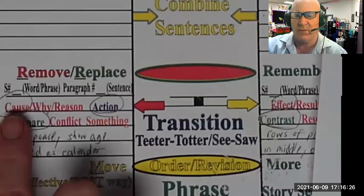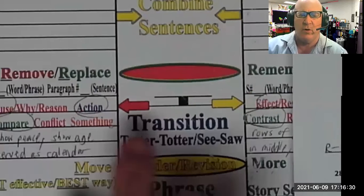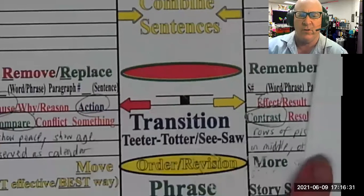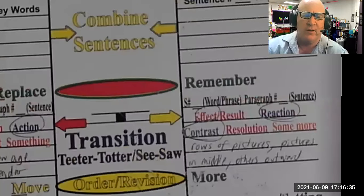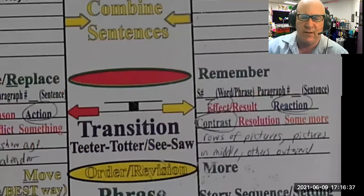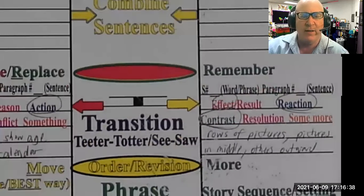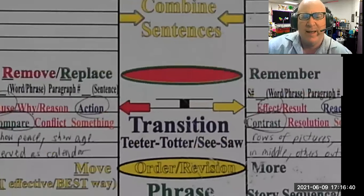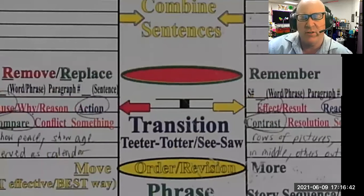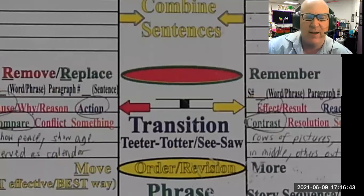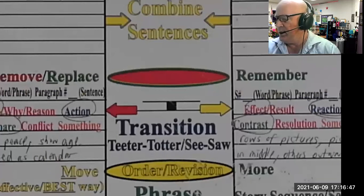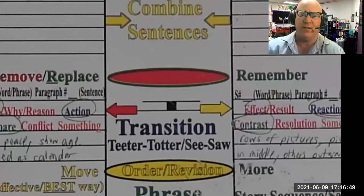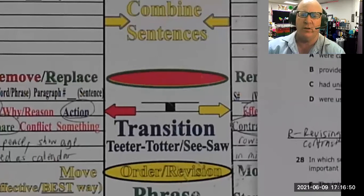There's a cause and effect relationship in the other question we're going to look at. It's also known as an action-reaction relationship. Cause comes before effect in the alphabet, and in reading content, actions come before reactions - every action has an equal and opposite reaction.